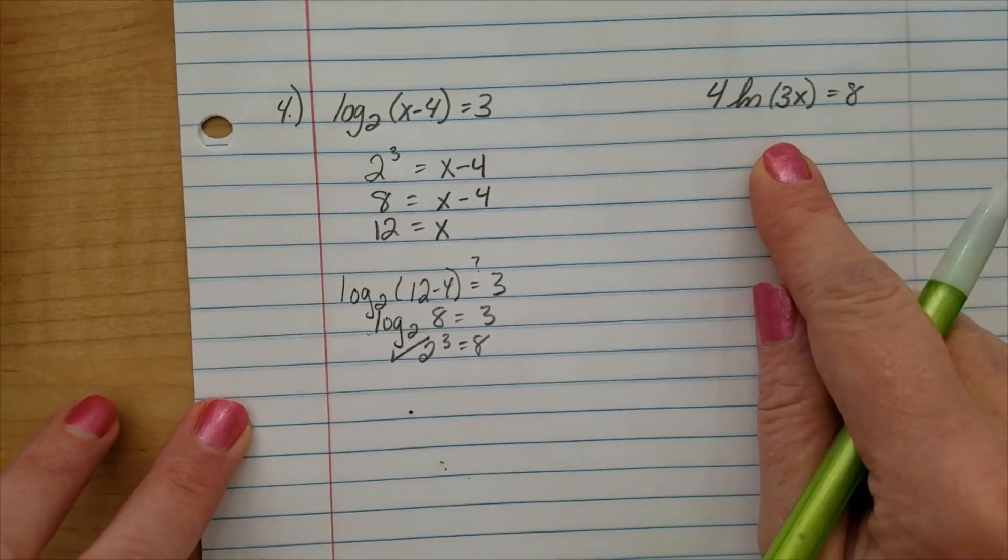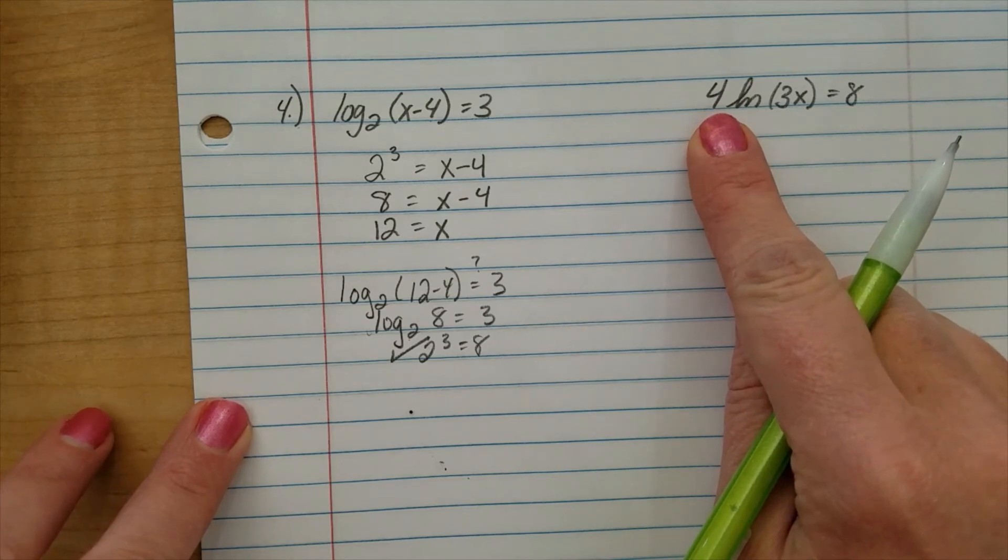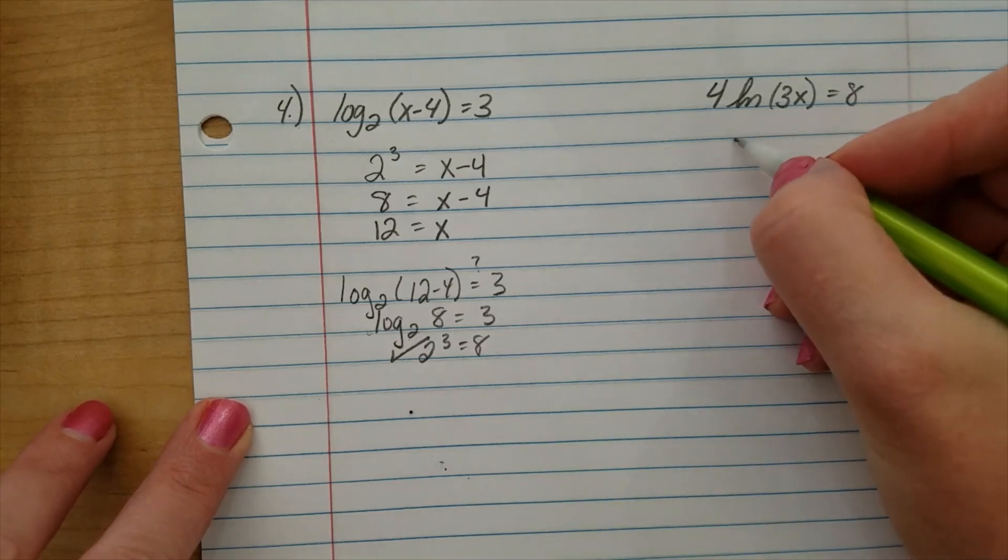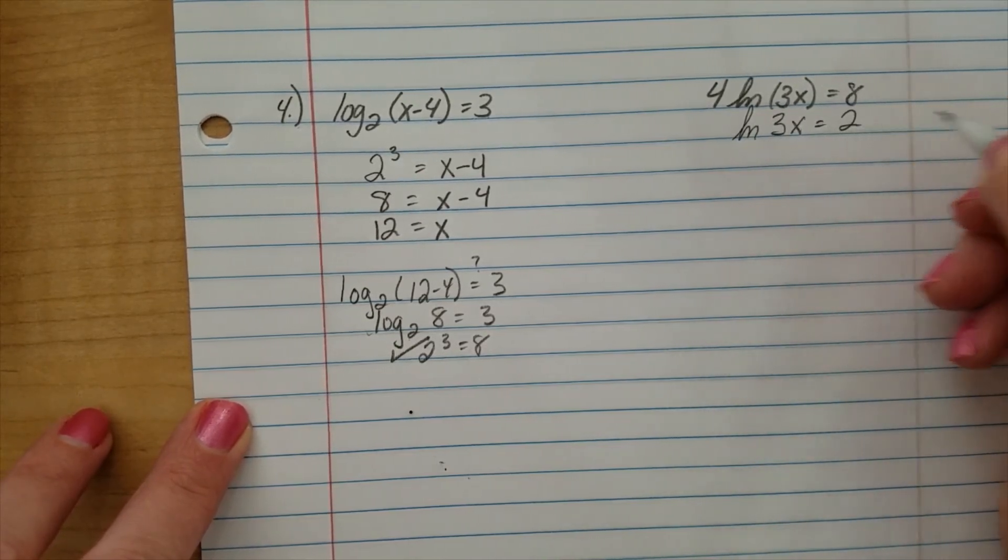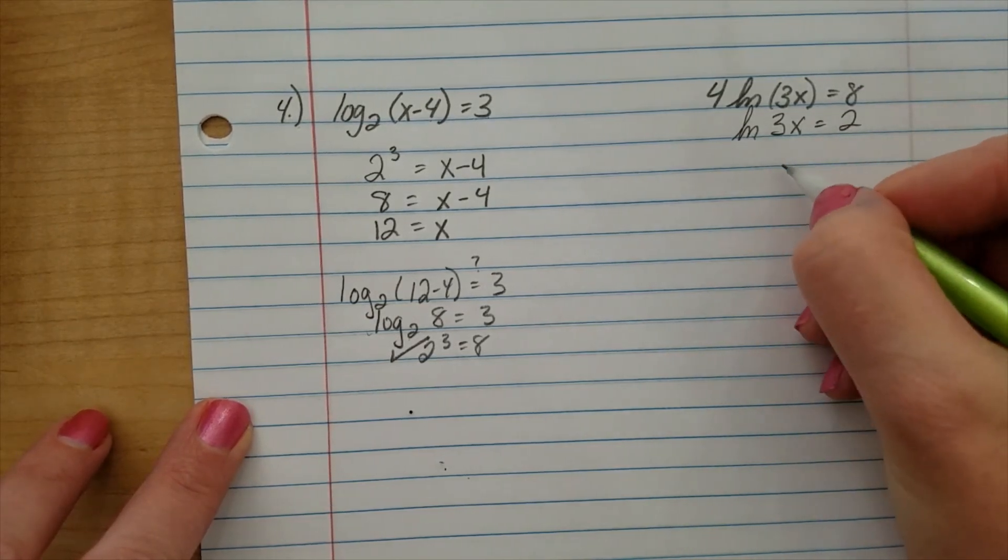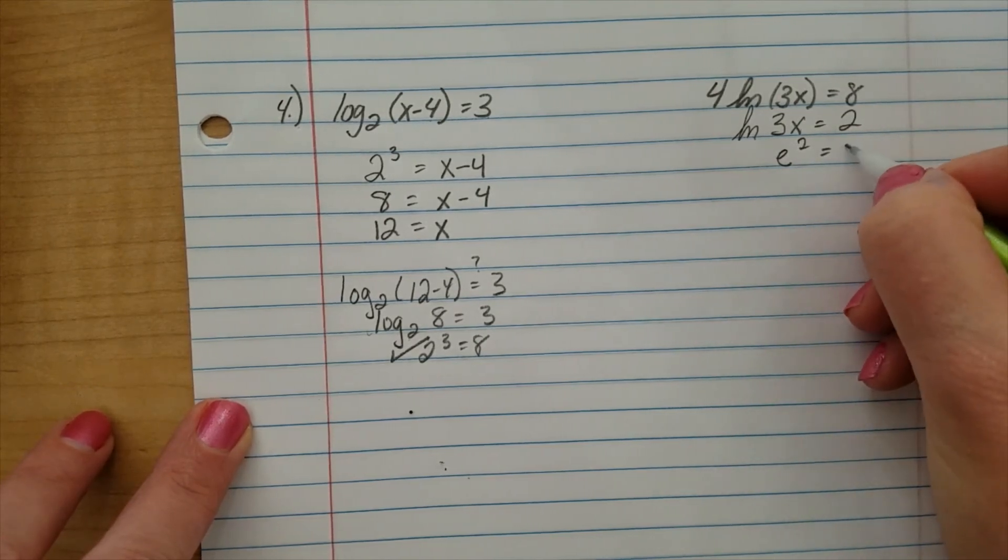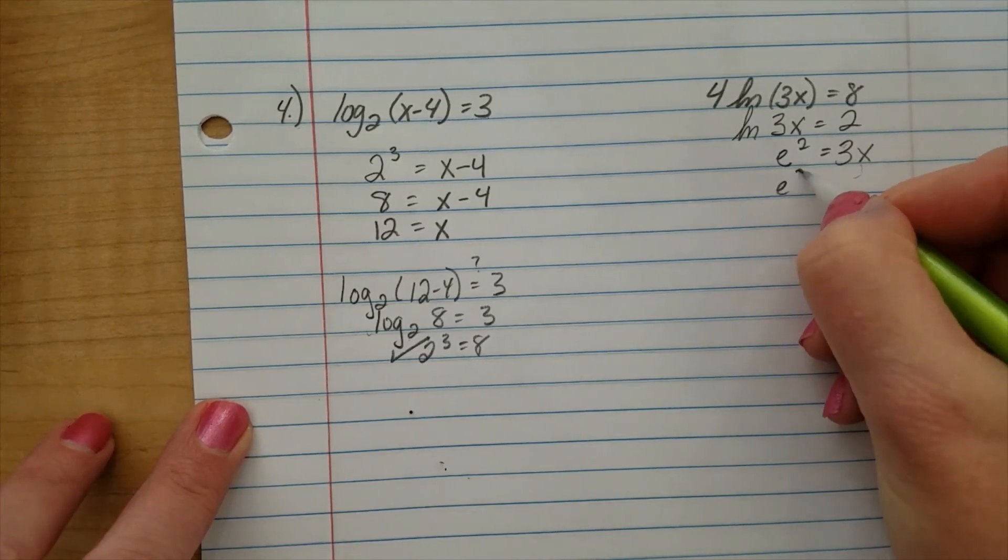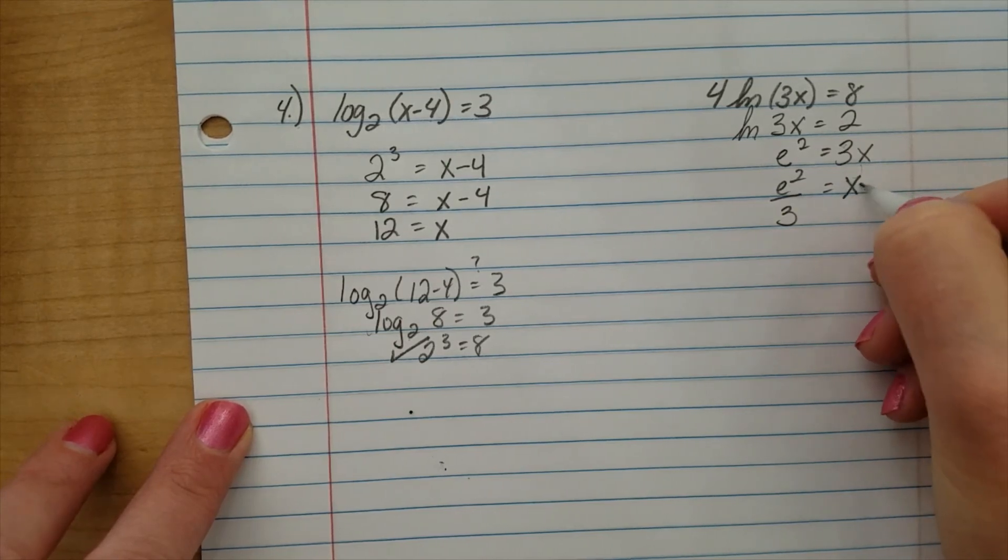Let's do another one. Here, we need to, before we start moving into exponential form, let's get rid of this 4. We can divide both sides by 4. Natural log of 3x equals 2. We'll move this into exponential form. The base of the natural log is e. e squared equals 3x. We'll divide out the 3.